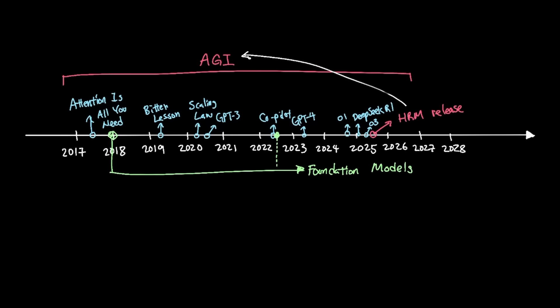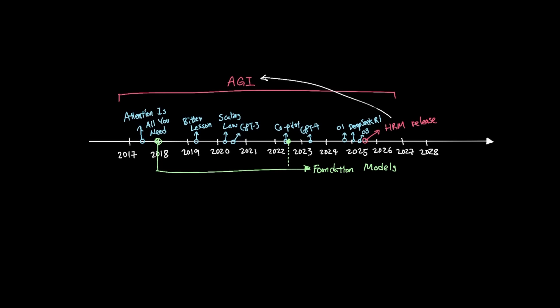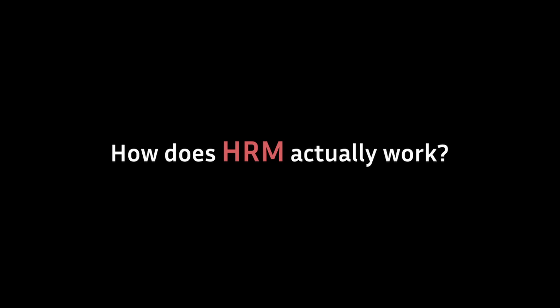So HRM is not an antithesis to scaling law, but rather an architecture improvement in how neural networks could learn. Now that we cleared up some of the confusions around HRM, how does the HRM model actually work?